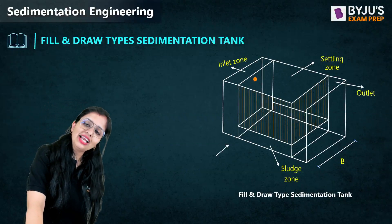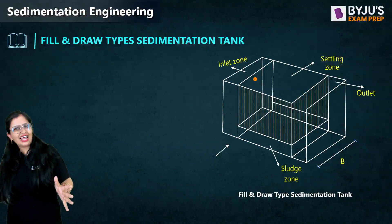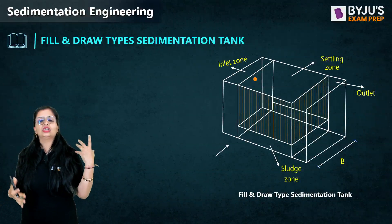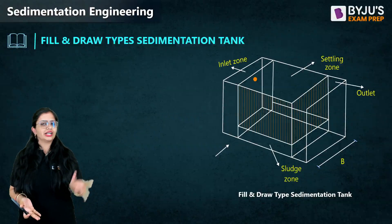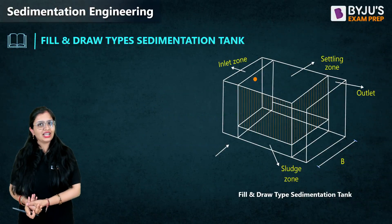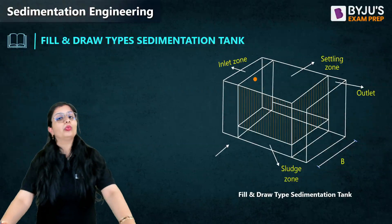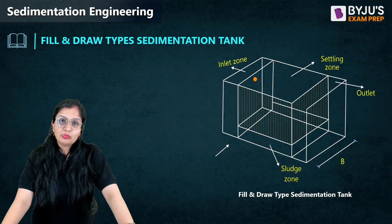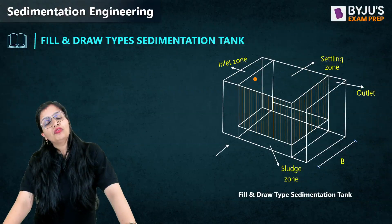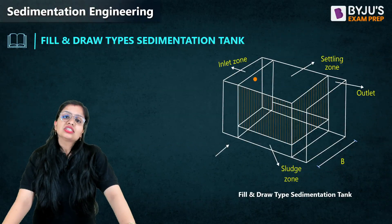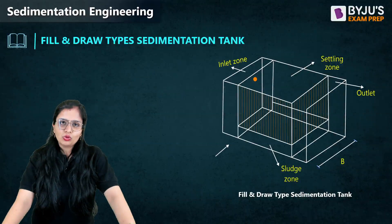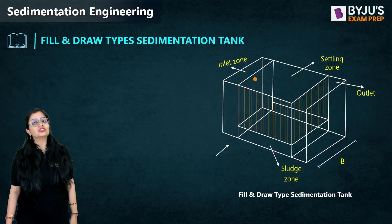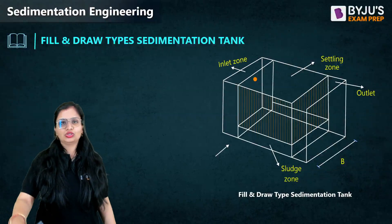If you want to see the 3D view, you have the inlet zone, settling zone, sludge zone, and outlet. For wastewater, the sludge — called primary sludge — cannot be directly disposed. So we go for further treatment in a sludge digestion tank. If the sludge can be disposed without adverse effects, it's okay; otherwise, further treatment is required before disposal.